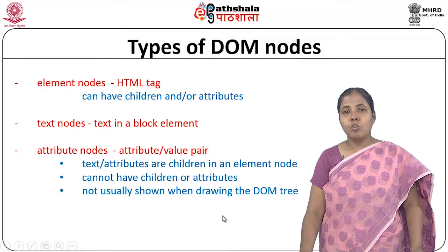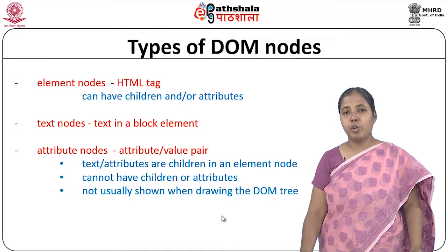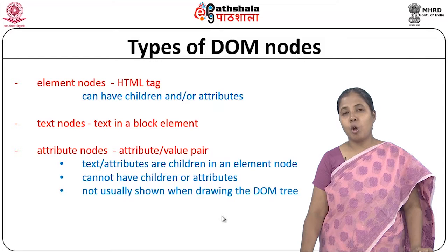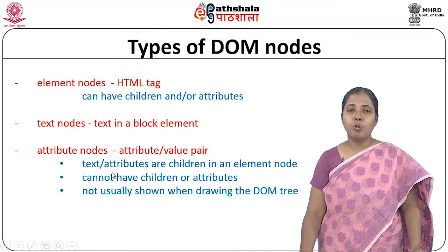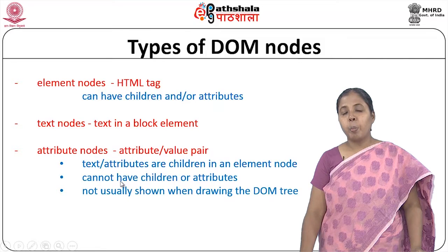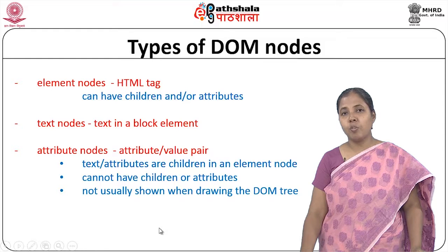DOM nodes have different classifications: all HTML tags are called element nodes and can have children like other elements or attributes. Text that appears in an HTML document is called a text node — any text in a block of an element is a text node. Elements can have attributes; those nodes are called attribute nodes, which appear as an attribute name with its value. Attribute nodes can be children of an element node but cannot have children or attributes, and are not shown when drawing the DOM tree.